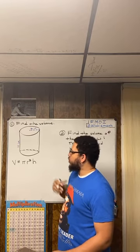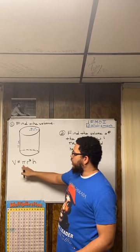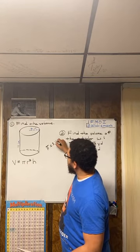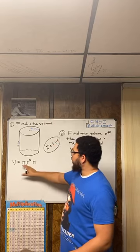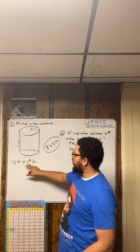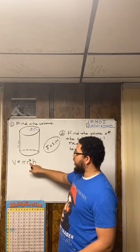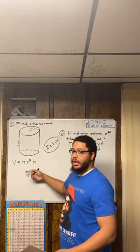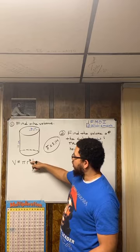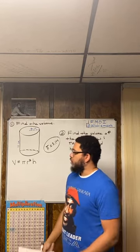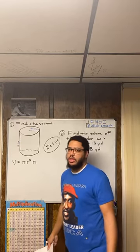This formula tells me that I should take the value of pi, which is, we use 3.14 for pi. And then it tells me I need to square the radius first, and then multiply by that. And then multiply by whatever the height of the cylinder is. All it is is a set of instructions.